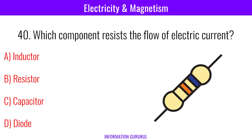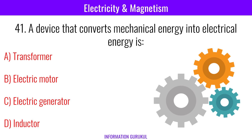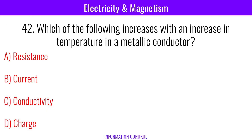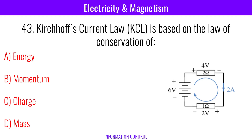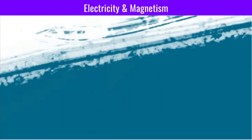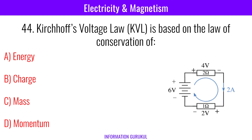Which component resists the flow of electric current? Resistor. A device that converts mechanical energy into electrical energy is an electric generator. Which of the following increases with an increase in temperature in a metallic conductor? Resistance. Kirchhoff's current law is based on the law of conservation of charge. Kirchhoff's voltage law is based on the law of conservation of energy.